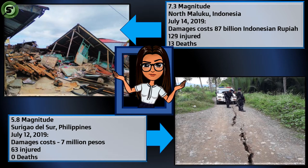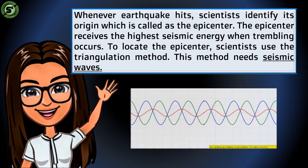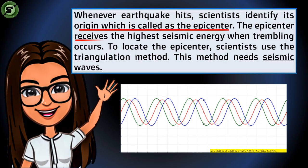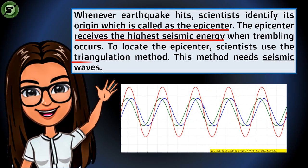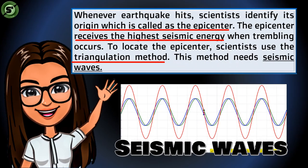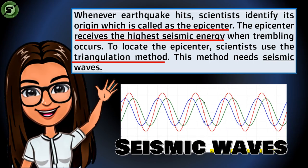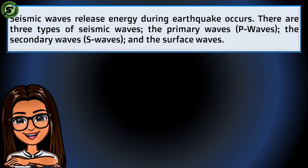There were 63 recorded injuries. Whenever an earthquake hits, scientists identify its origin, which is called the epicenter. The epicenter receives the highest seismic energy when trembling occurs. To locate the epicenter of an earthquake, scientists use the triangulation method. For this method to be done, time information of the seismic waves is needed. Seismic waves release energy when an earthquake occurs.